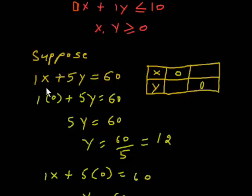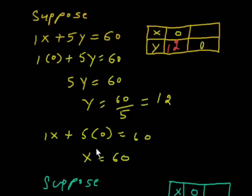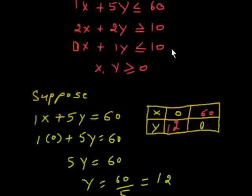First of all, suppose first condition 1x plus 5y equals 60. Suppose x is 0, then we put the value of x as 0 and y's value will be 12. Now, if suppose y is equal to 0, then x value is 60. So this value I show in the table.